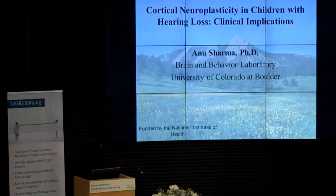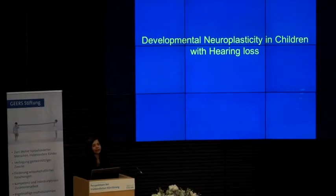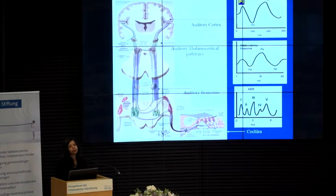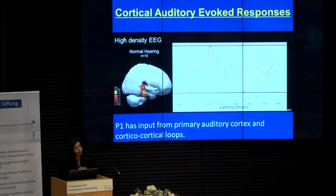I'll be looking at cortical neuroplasticity and exploring the clinical implications for children with hearing loss. Our lab has been looking mainly at developmental neuroplasticity in children, and the biomarkers we are using are cortical auditory evoked potentials. The most useful biomarker is the P1, which comes from the area of the auditory cortex. We've looked at it using high-density EEG and fMRI, and we know it has input from the primary auditory cortex, so we have a good biomarker for looking at function and development of the cortex.